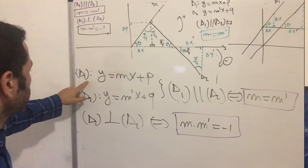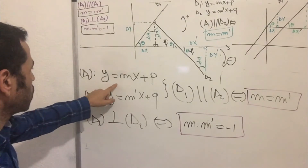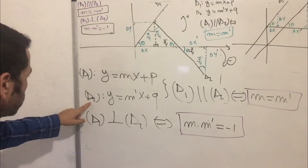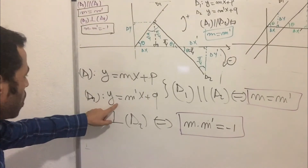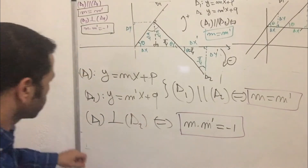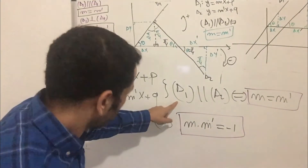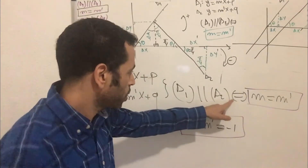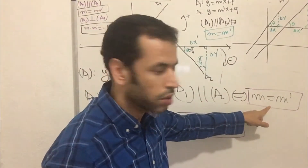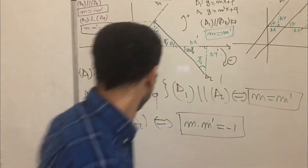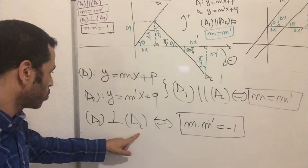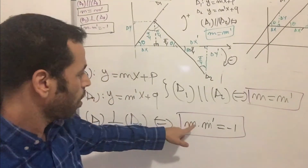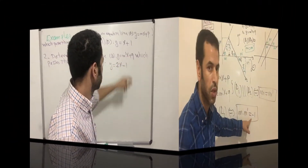To summarize: for the original lines delta one (y = mx + p) and delta two (y = m prime x + q), if delta one and delta two are parallel, then m equals m prime. If delta one and delta two are perpendicular, then m multiplied by m prime equals minus 1.